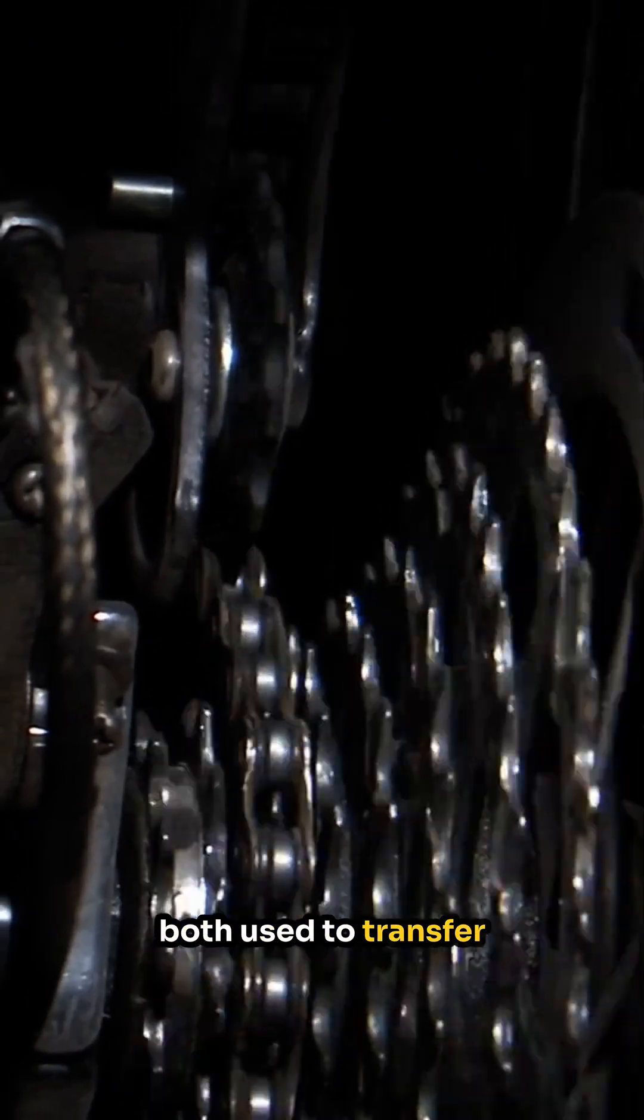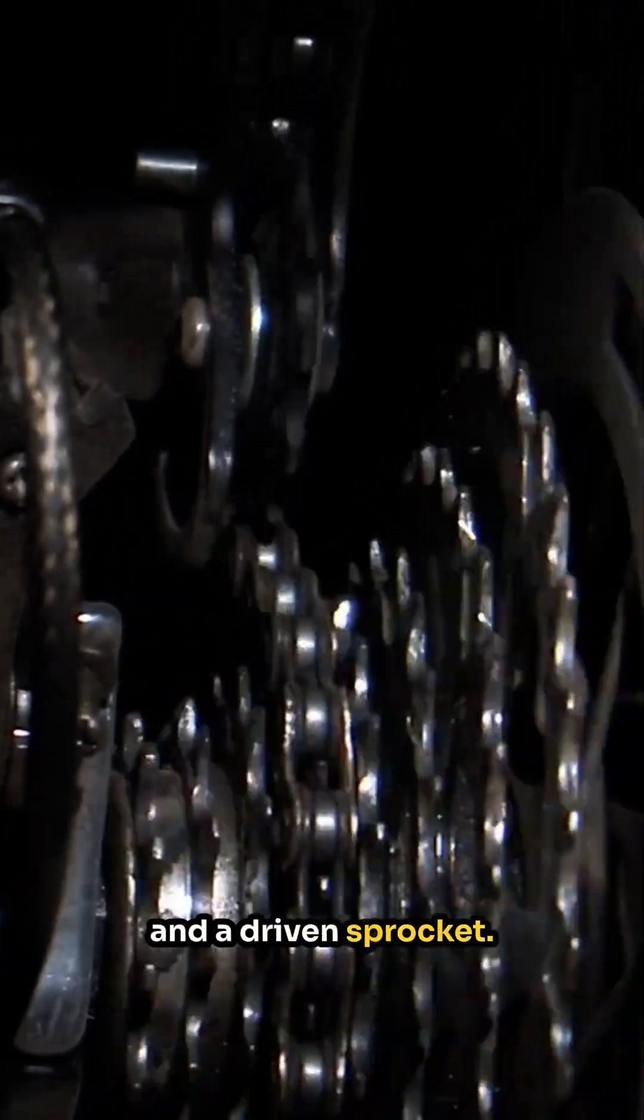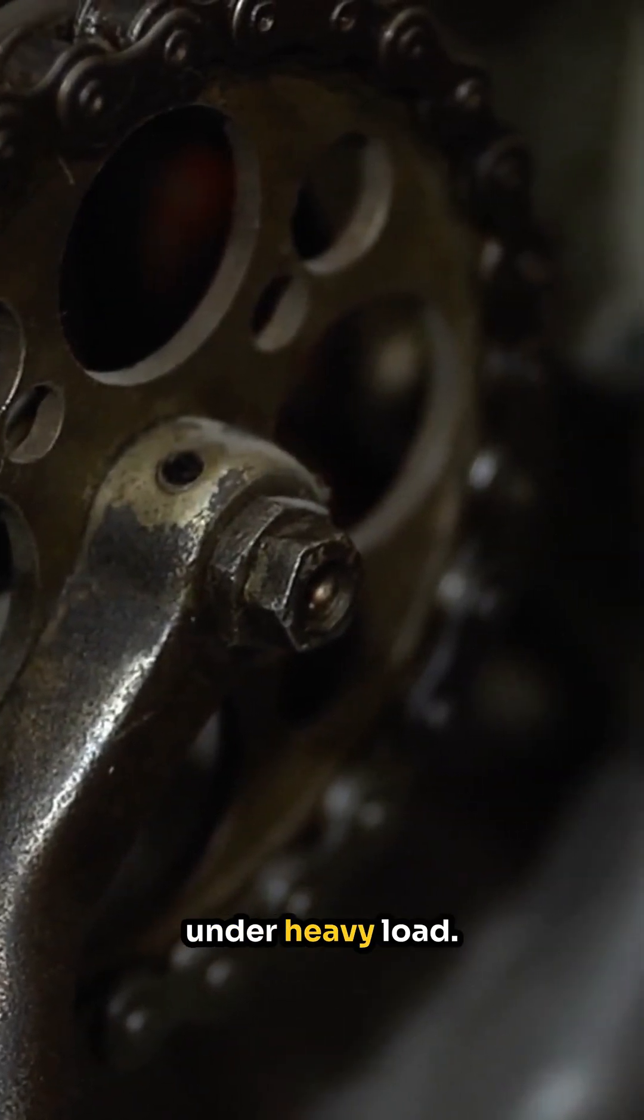Belts and chains are both used to transfer power between a drive and a driven sprocket. However, they behave quite differently under heavy load.